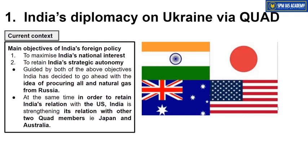This is why India decided to procure crude oil and natural gas from Russia. This decision fulfills both of India's goals — it meets India's energy requirements, helping cool down potential inflation in the economy, and at the same time it sends a message to the US that India wants autonomous decision-making power and does not want to completely align with any one bloc. This is how India is balancing its relations between the US and Russia — staying with the US but not going fully anti-Russia, as seen in India abstaining from all resolutions against Russia in the UN General Assembly and UNSC.